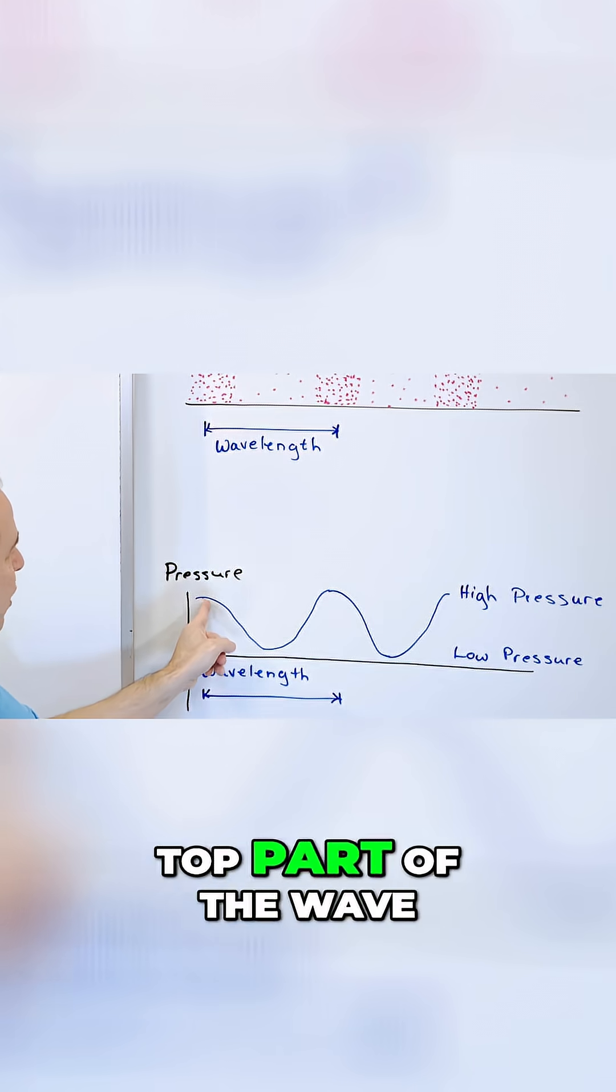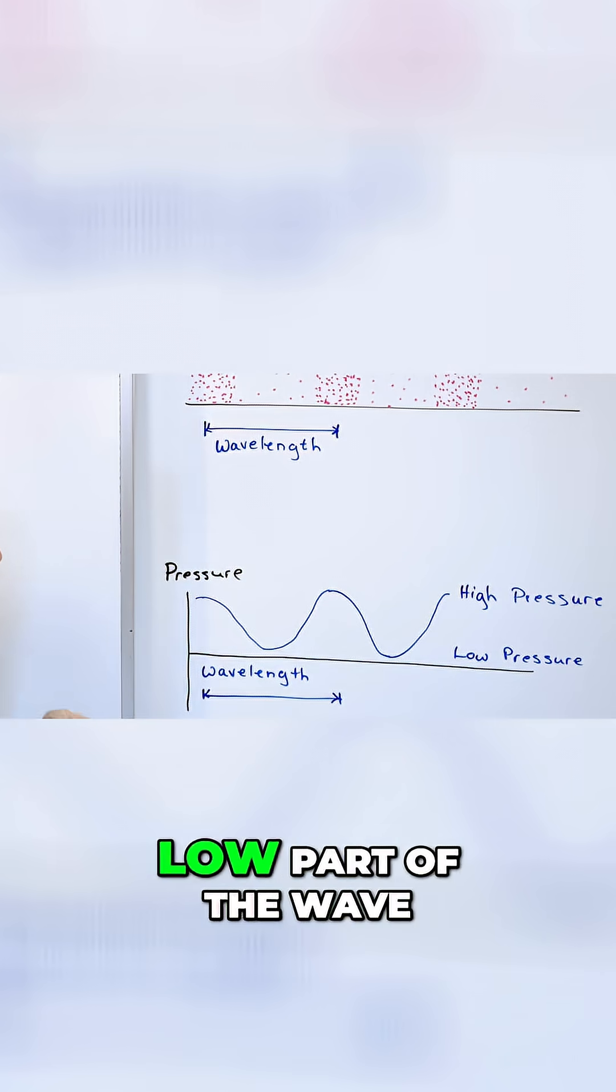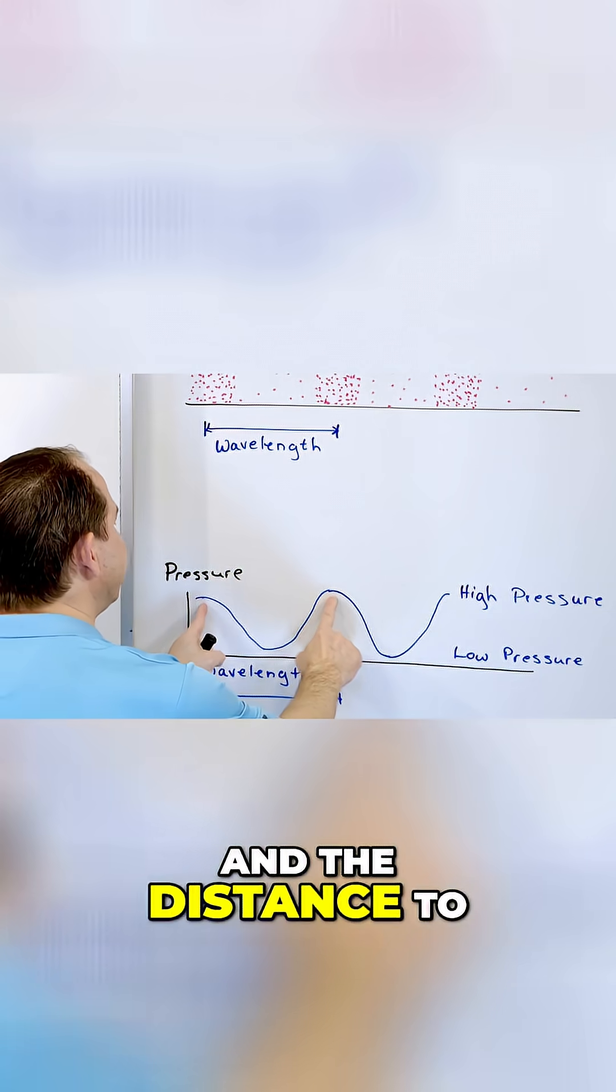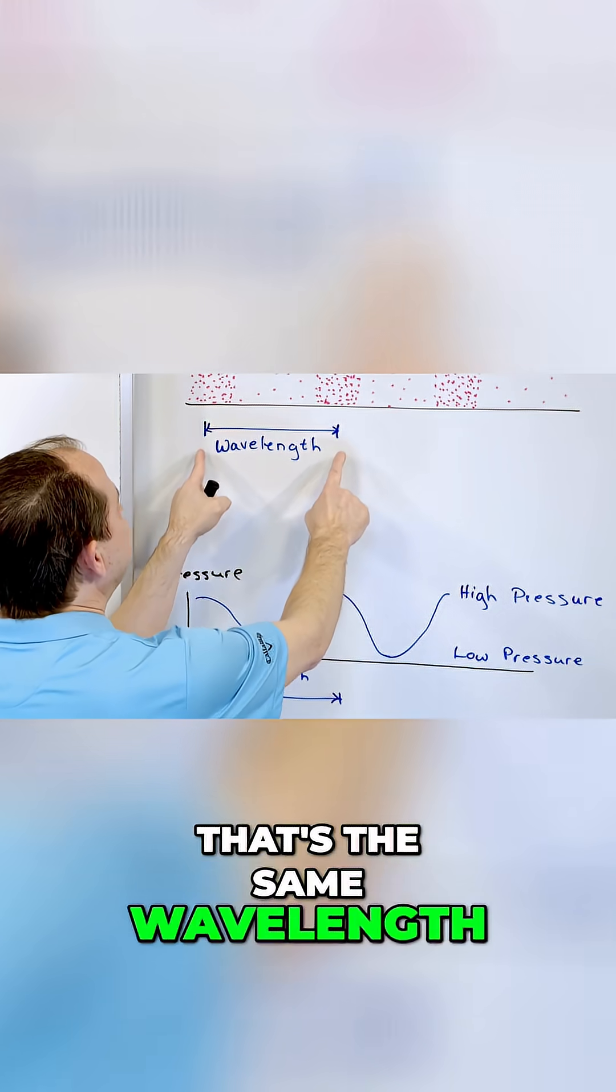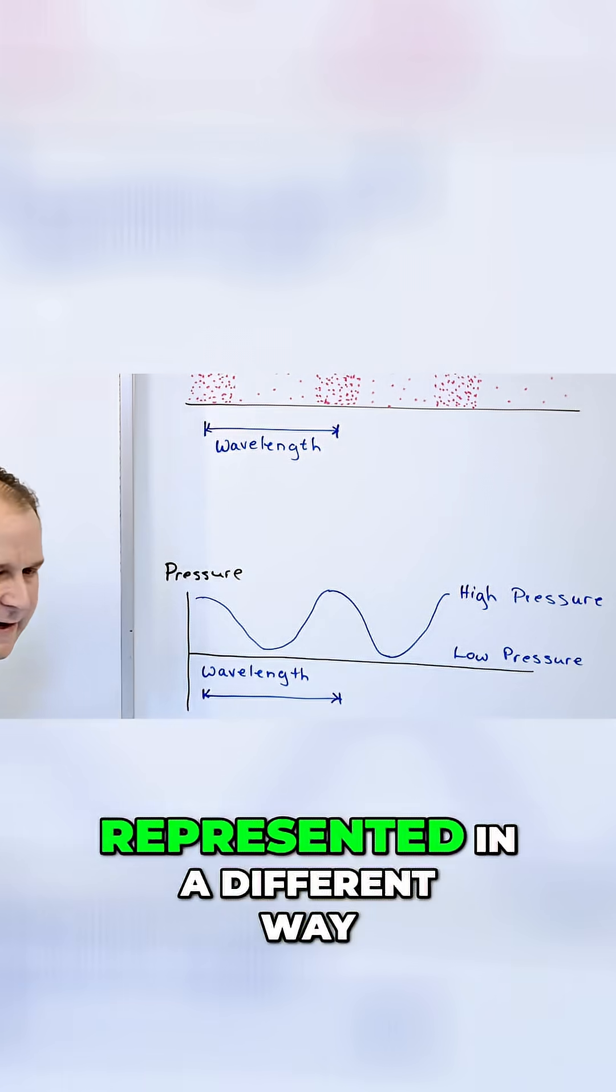High pressure is the top part of the wave, low pressure is the low part of the wave, and the distance to where the wave repeats itself is called the wavelength. That's the same wavelength as what we drew up here represented in a different way.